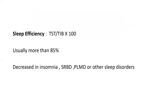Sleep efficiency is another very important term. It is the percentage of total sleep time by the total time spent in bed, and is normally more than 85%. Patients with insomnia, sleep-related breathing disorders, periodic limb movement disorders, parasomnias, or any sleep-related disorder usually have decreased sleep efficiency. As disorders are managed — for example, insomnia is well-managed — sleep efficiency gradually improves into the normal ranges.